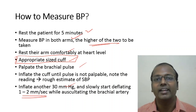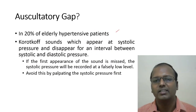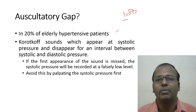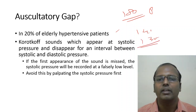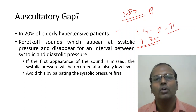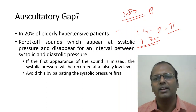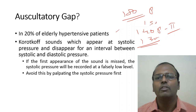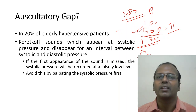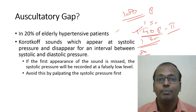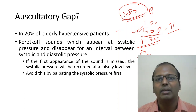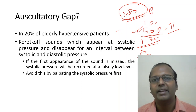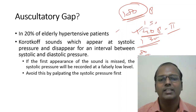Always palpate first before auscultation to avoid missing the auscultatory gap. In 20% of elderly hypertensive patients, Phase 1 Korotkoff sound appears at high pressure (e.g., 180 mmHg), then disappears until 130-140 mmHg where Phase 2 sounds begin — a large silent gap in between. If you inflate only to 150 mmHg, you will falsely record 140/80 instead of the true 180/80, underestimating systolic BP. Palpating first ensures the cuff is inflated above the true systolic pressure.